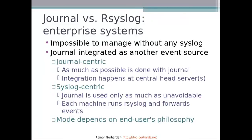If you look at enterprise systems, things are a little bit different. As I outlined in my other short presentation, it's impossible to manage an enterprise system without any syslog or any other kind of message normalizer like RSyslog. In this environment, we always have RSyslog along with a variety of other protocols. The journal here is integrated as just another event source. I can envision — based on experience with similar setups on Windows and the event log — that we will have journal-centric setups, where as much as possible is done with the journal, with integration happening at central head servers inside the environment. This could be organized by geographic region or org chart, but it's more or less journal-centric: do as much with the journal as possible, do the rest with syslog.